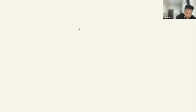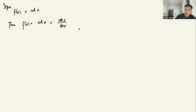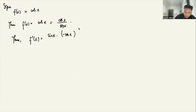Now if f(x) = cotangent x. From trigonometry, cotangent x equals cosine x over sine x. We again use the quotient rule. So f'(x) = sine x times the derivative of cosine x, which is negative sine x, minus cosine x times the derivative of sine x, which is cosine x, all over sine squared x.